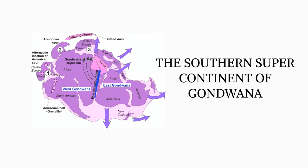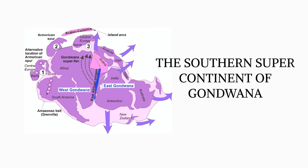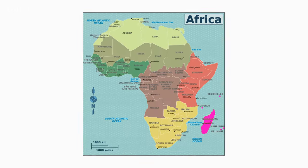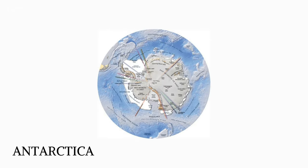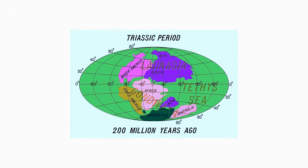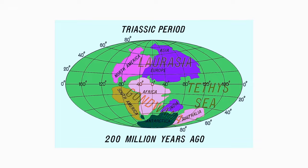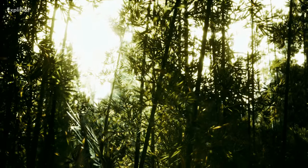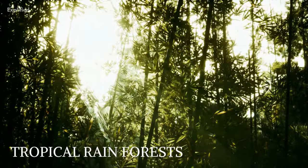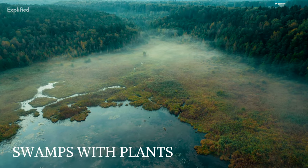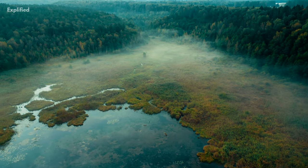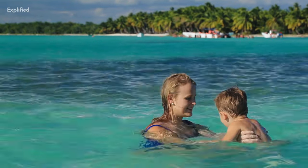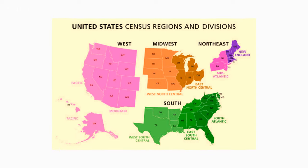The southern supercontinent of Gondwana was formed by the union of South America, Africa, India, Australia, and Antarctica. Laurasia was near the equator, hence polar glaciation was negligible. On exposed land, tropical rain forests and swamps with plants that would eventually become coal beds thrived, and shallow tropical seas covered extensive areas of what is now the United States Midwest and South.